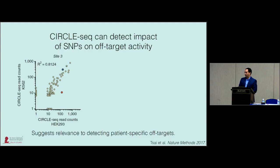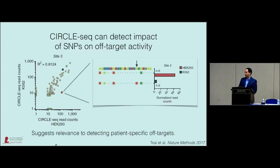We also tested whether CircleSeq could detect differences in off-target cleavage activity between different cell lines. Performing CircleSeq on eight different targets across different cell lines, correlations are generally good, but some outliers correspond to SNPs in the genomes of those cells. Targets more closely matched to the guide have high CircleSeq read counts, while those with mismatches have orders-of-magnitude lower read counts. This suggests relevance for detecting patient-specific off-target sites in the future.